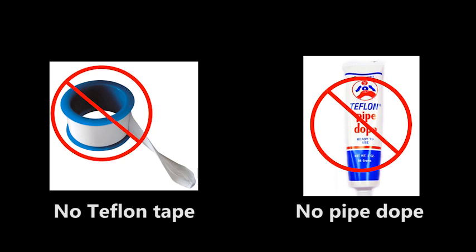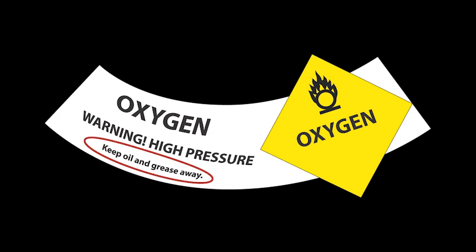Do not use Teflon tape or pipe dope on valve threads to prevent leaks. Never use oil, grease, or other lubricant on oxygen or other oxidizing gas cylinders. An auto ignition or explosion could result.